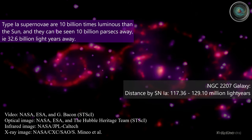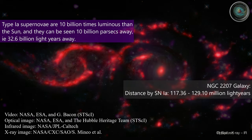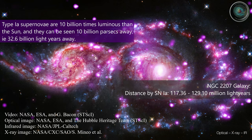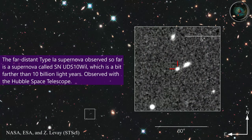Type 1A supernovae are 10 billion times more luminous than the Sun, and they can be seen up to 10 billion parsecs away. The farthest Type 1A supernova observed so far is called SNUDS-10, which is a bit farther than 10 billion light-years, observed with the Hubble Space Telescope.